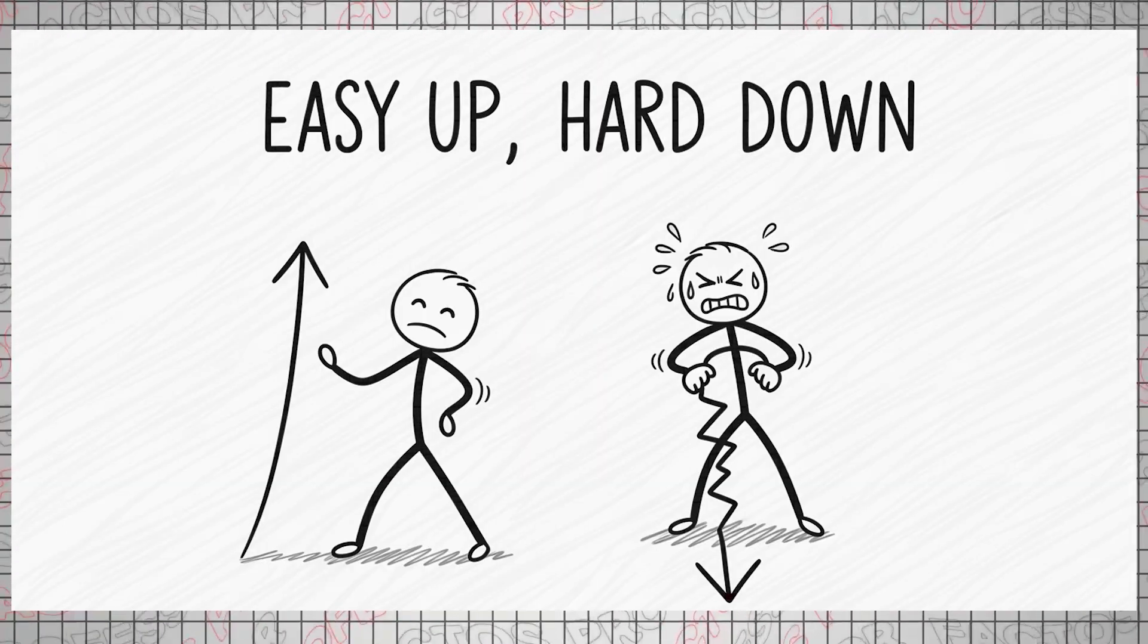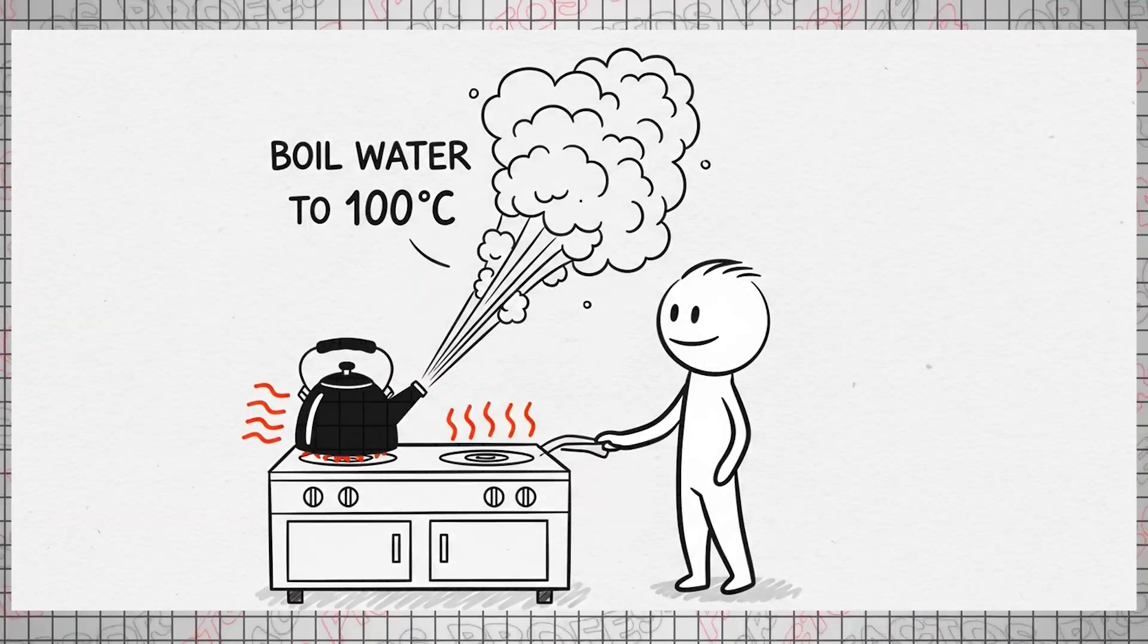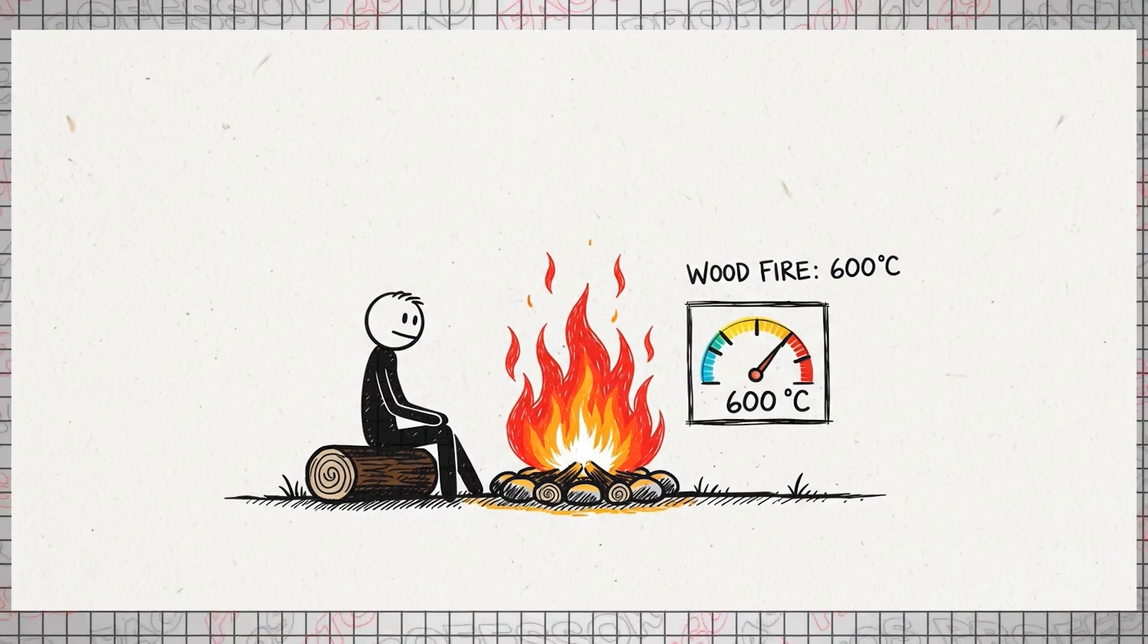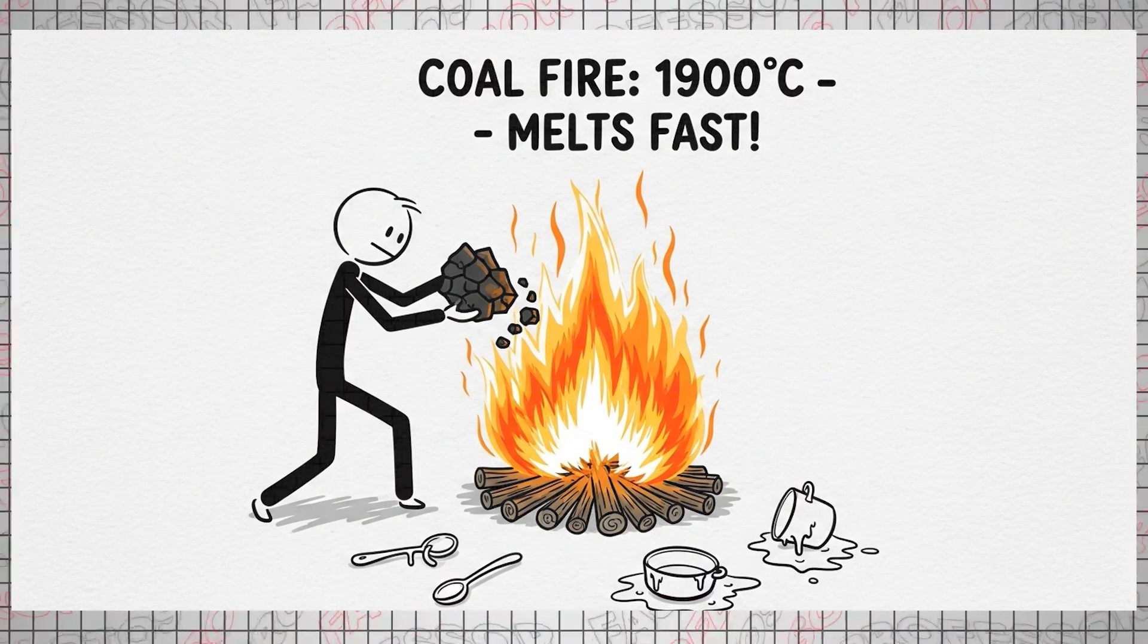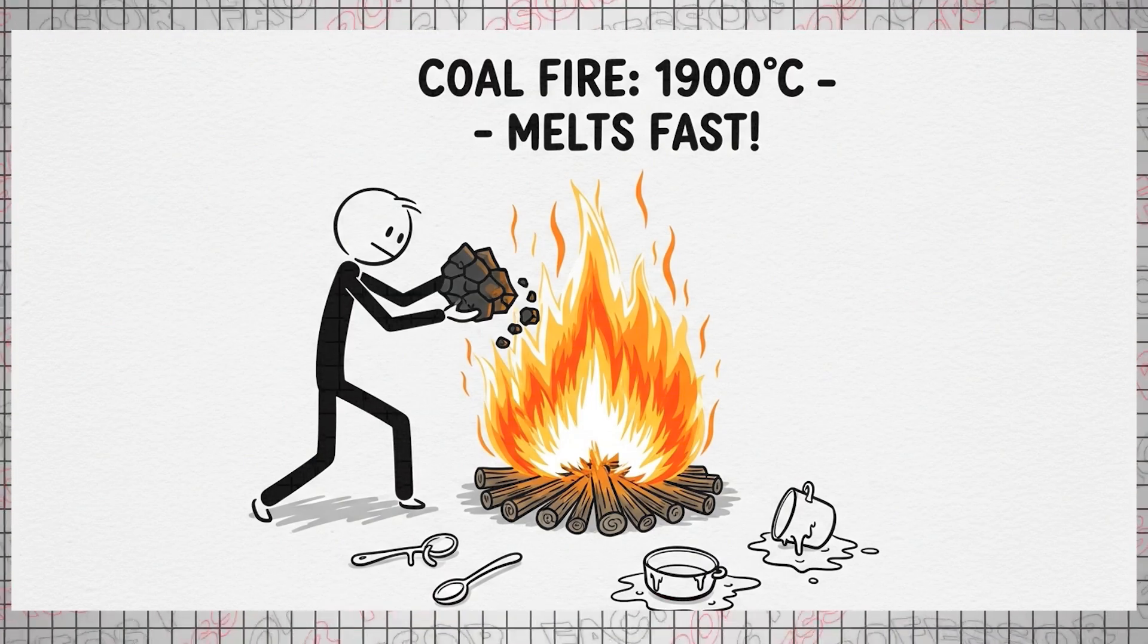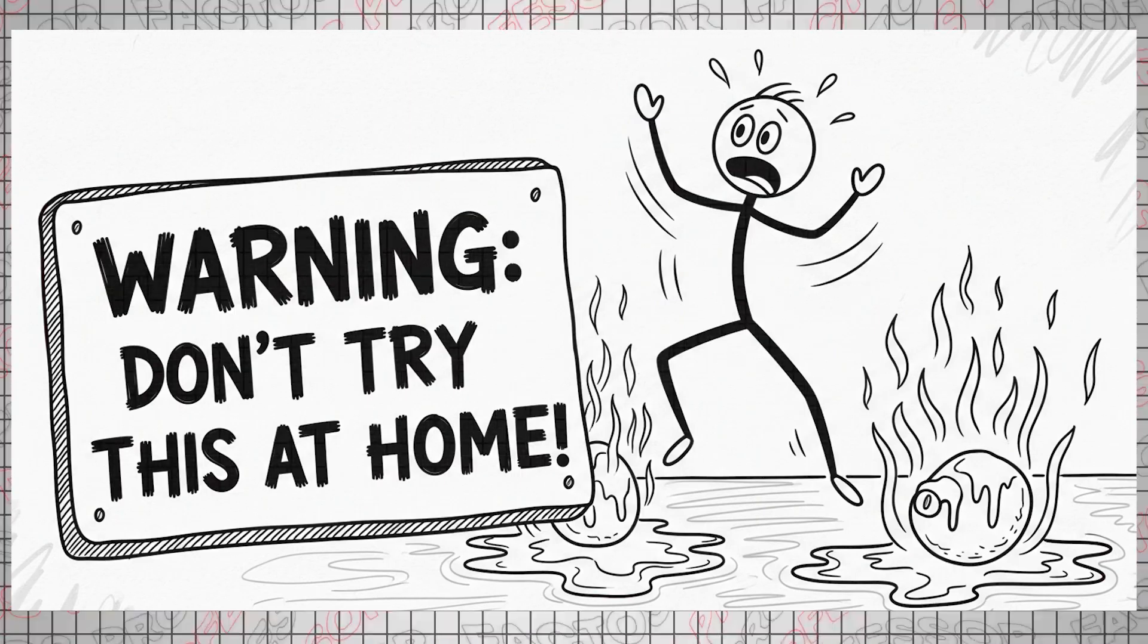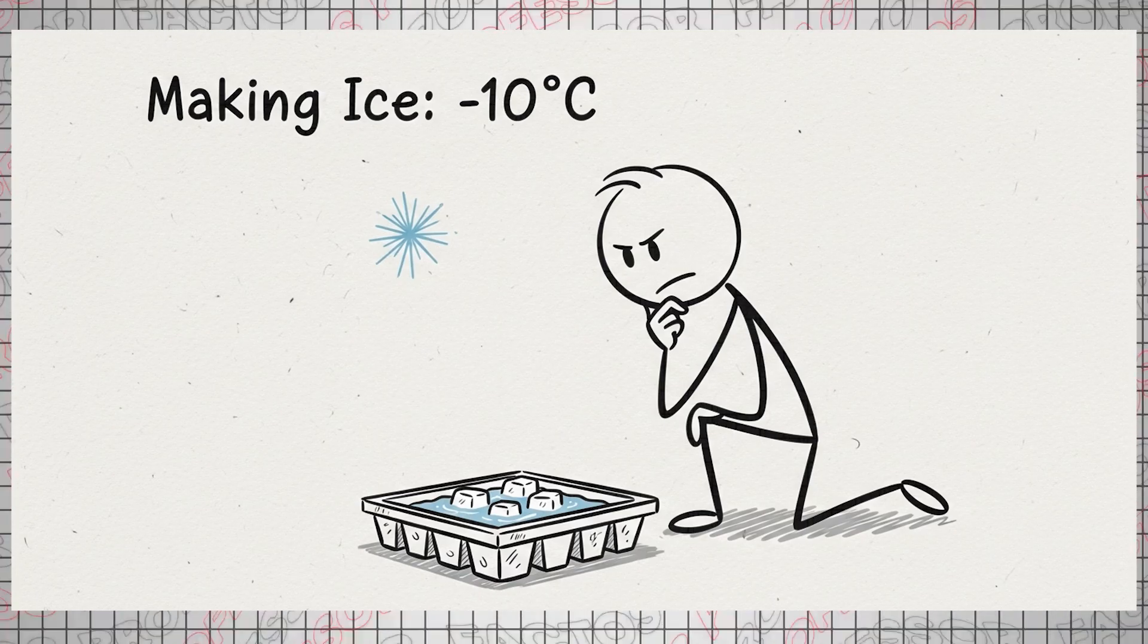However, there's a less noticed phenomenon. Increasing temperature is always significantly easier than decreasing it. You can easily boil water to 100 degrees Celsius. A simple wood fire can generate around 600 degrees Celsius. Add coal, and you can melt almost anything in your house with a 1900 degrees Celsius flame in just a few minutes. But please, don't try this at home.